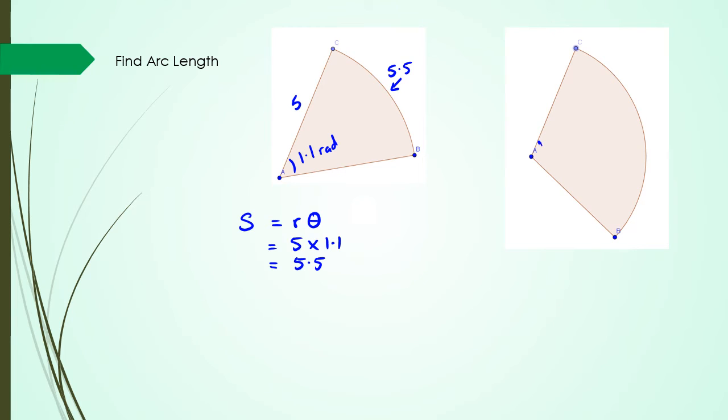Okay, next example, I'm going to make this 2 radians, and we're going to make this 7. So if we have s equals to r theta, then the radius is 7 multiplied by 2 radians, and I'm going to get 14 units, which is my arc length.